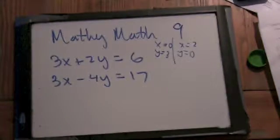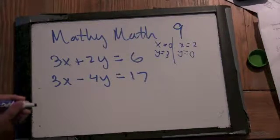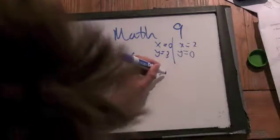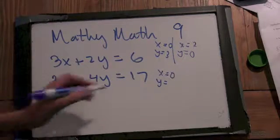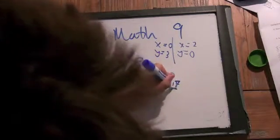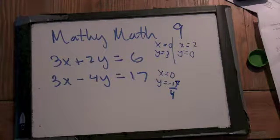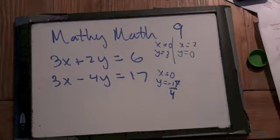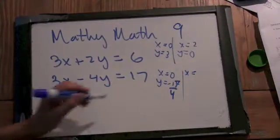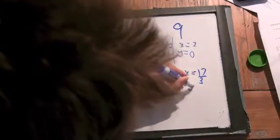So, what about on the second line? Well, x is 0, y is negative 17 fourths. Because you have to divide by negative 4. x equals 17 thirds when y equals 0.